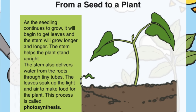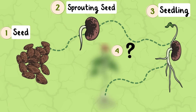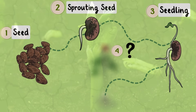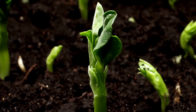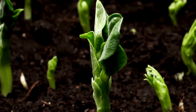As the seedling continues to grow, it will begin to get leaves and the stem will grow longer and longer. The stem helps the plant stand upright and also delivers water from the roots through tiny tubes. The leaves soak up the light and air to make food for the plant — this process is called photosynthesis. Finally, our plant becomes a flower!